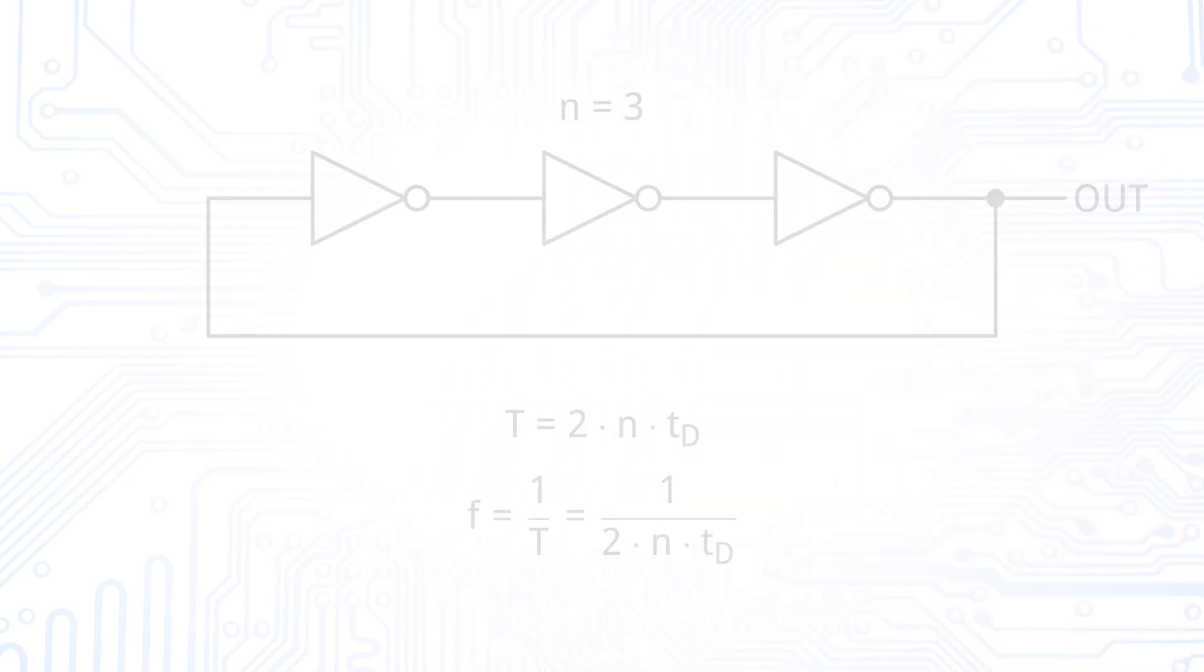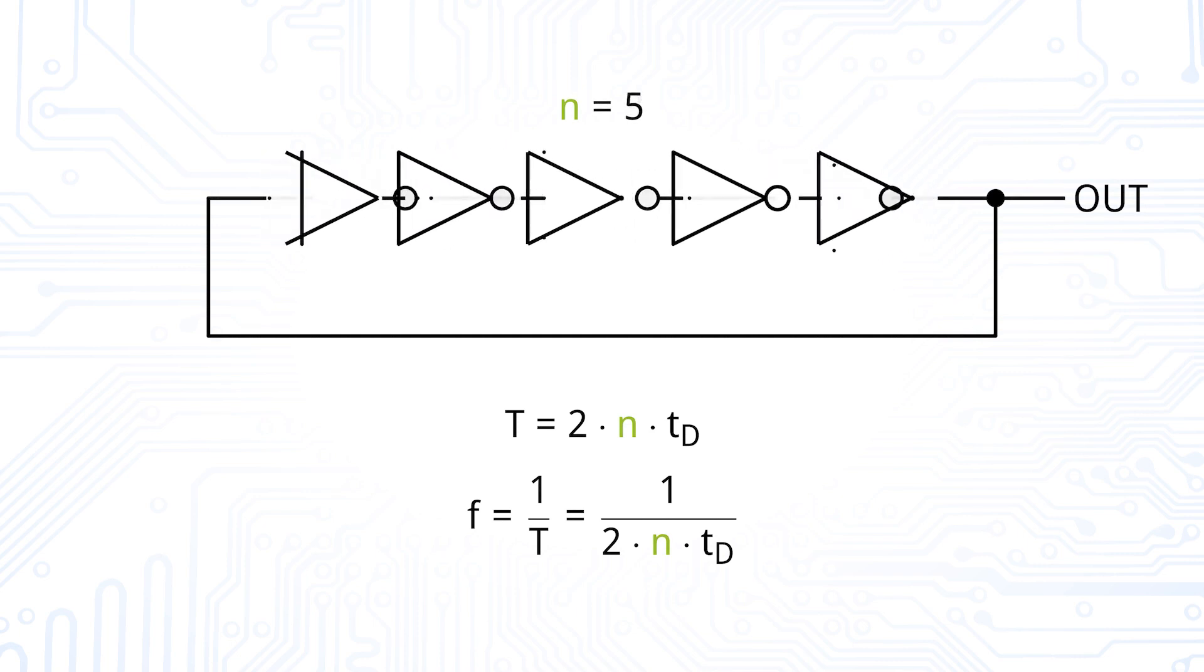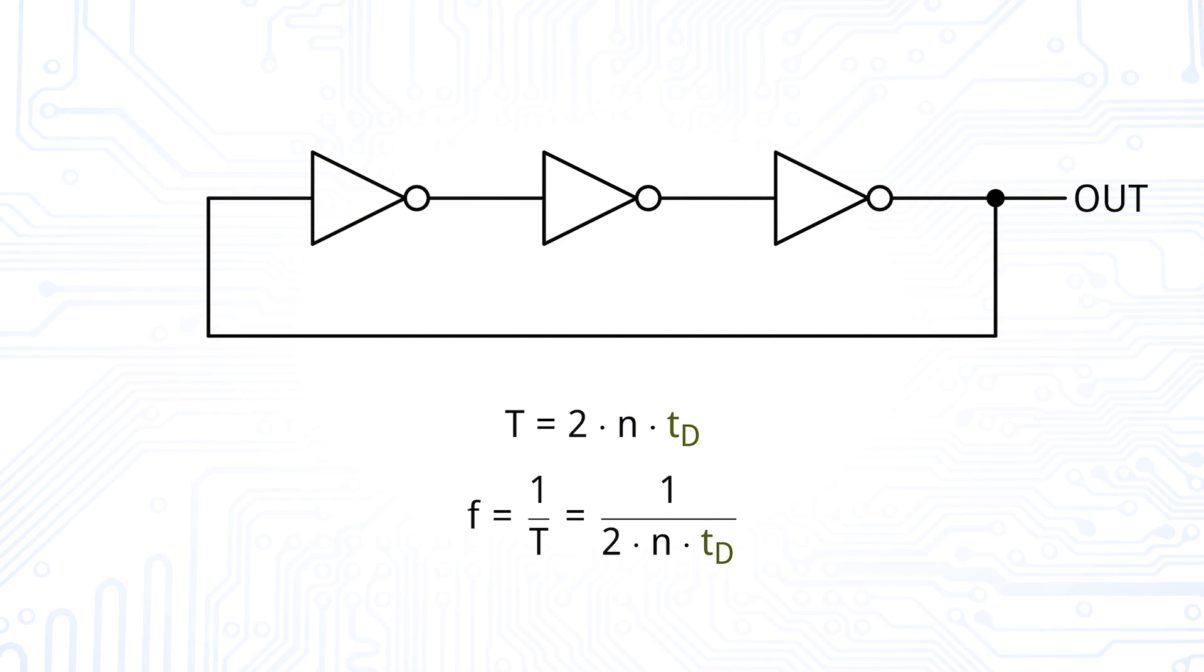But which possibilities do we have to change the frequency? We can simply either change the number of inverters in our loop, or we can adjust the delay time of the inverters. Changing the delay time can be done in different ways.